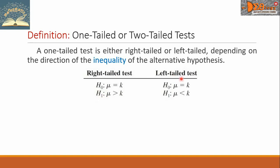While the left-tailed test, the Null Hypothesis will give the same Mu equals K. While the Alternative Hypothesis is H sub 1, this is given as Mu is less than K.